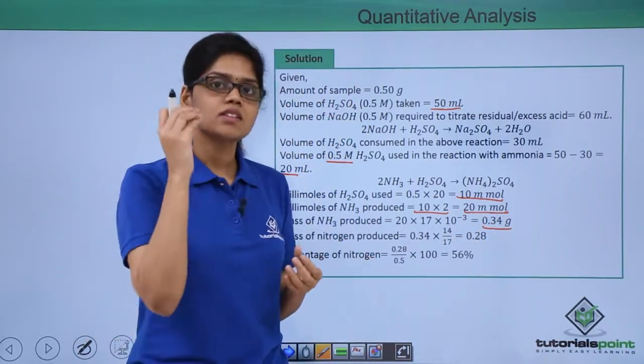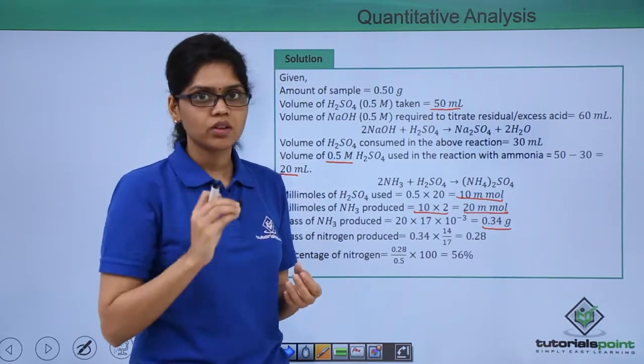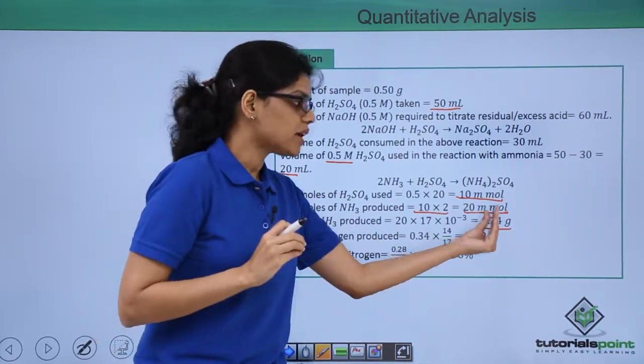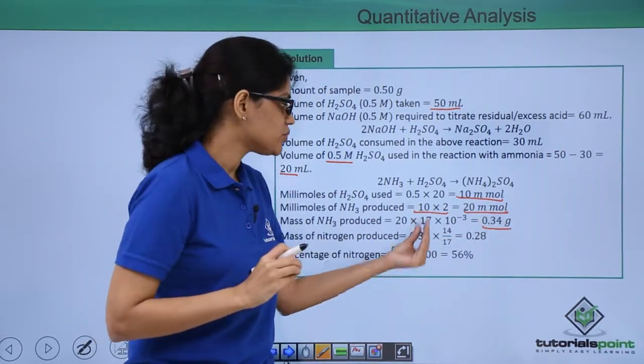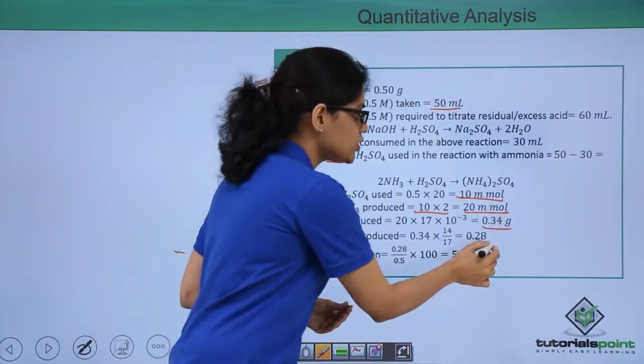All we need to do is determine the amount of nitrogen present in ammonia for which we have to simply multiply 0.34 with 14 and divide by 17 giving us 0.28.